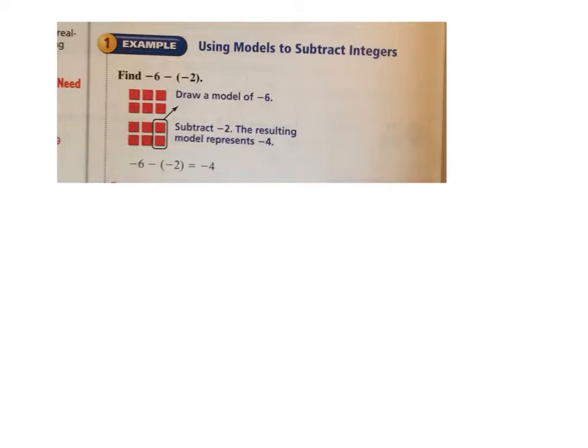So if I have negative 6 minus negative 2, you add the opposite. So you take - look here - subtraction is going to become addition, right? So the first number stays the same, subtraction becomes addition, and what is the opposite of negative 2? Positive 2.